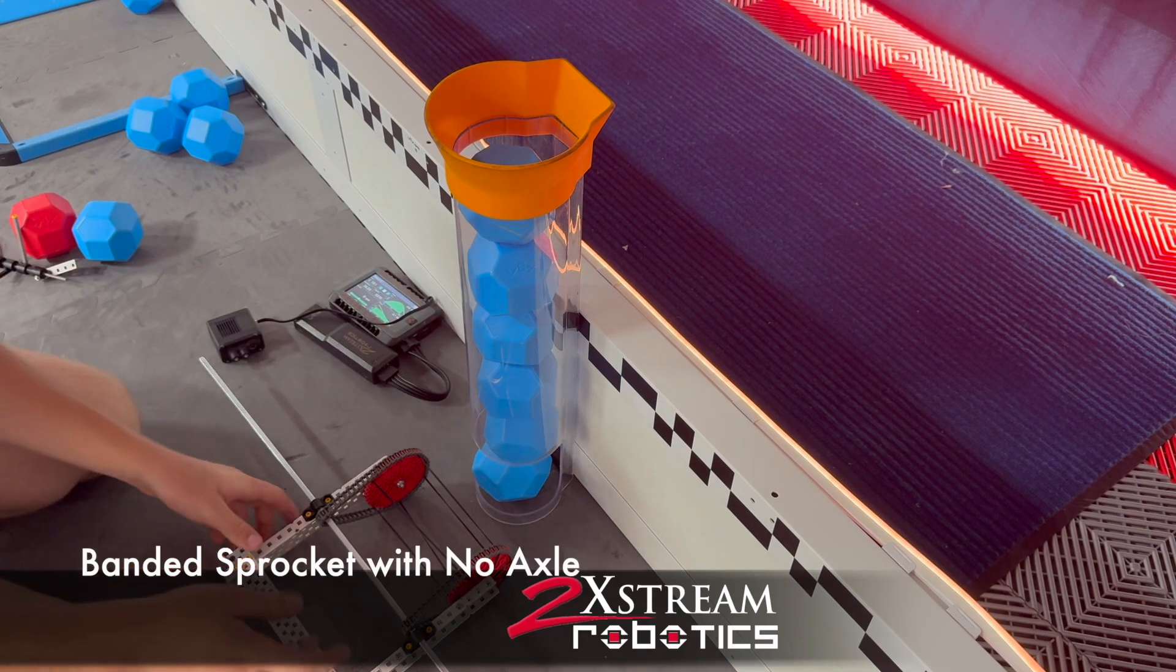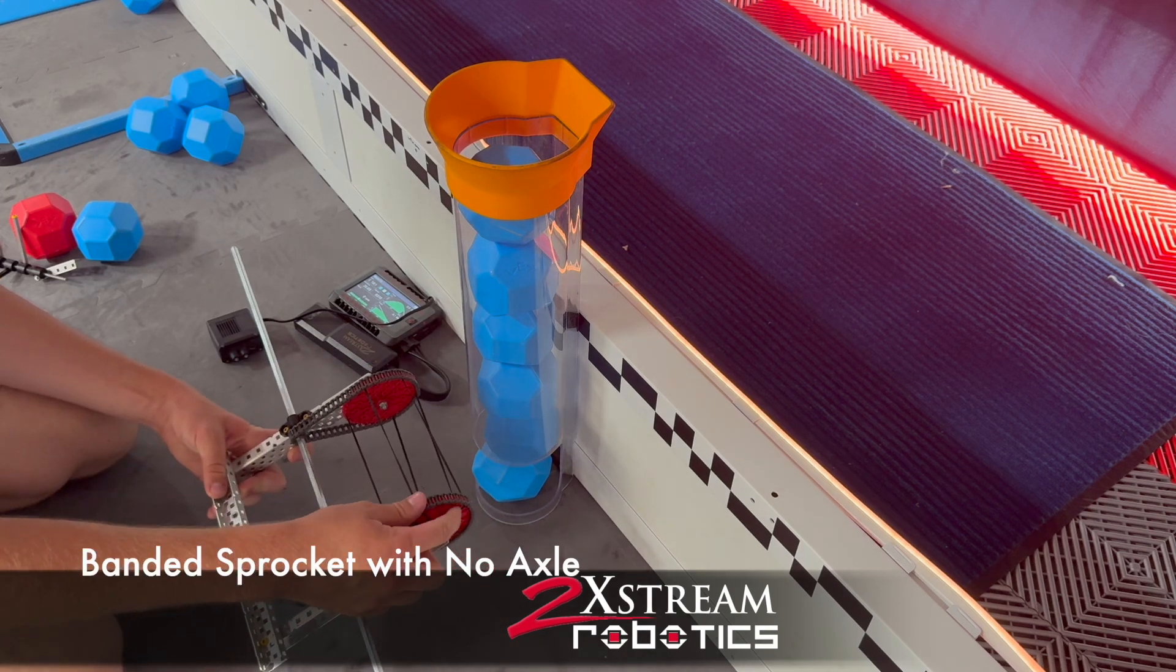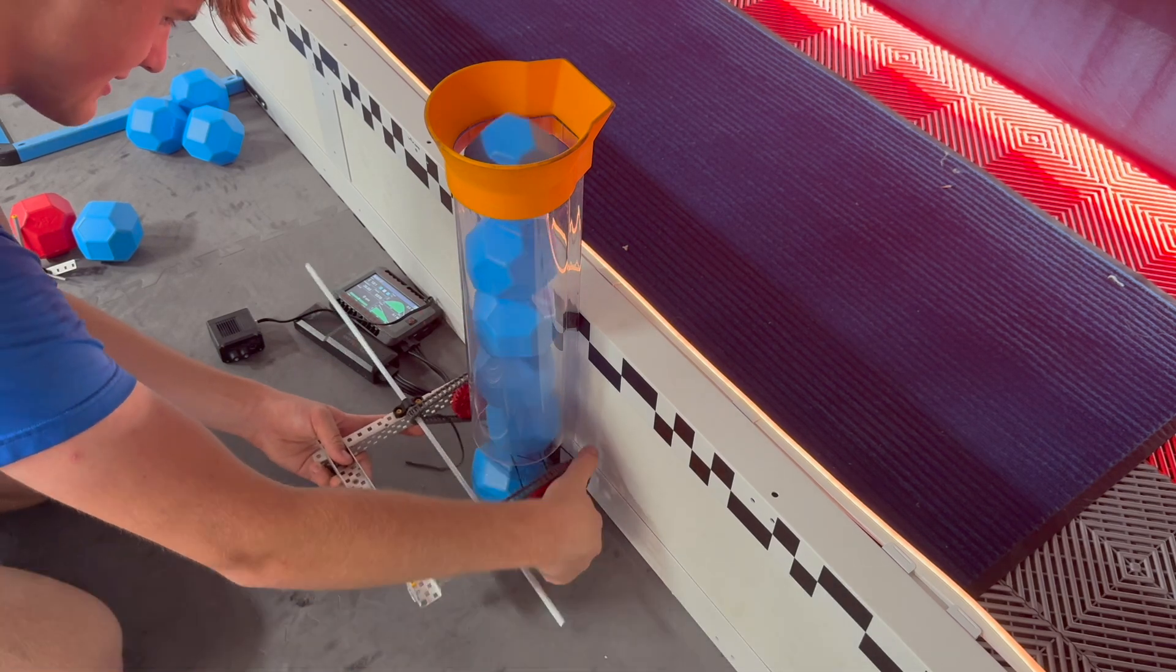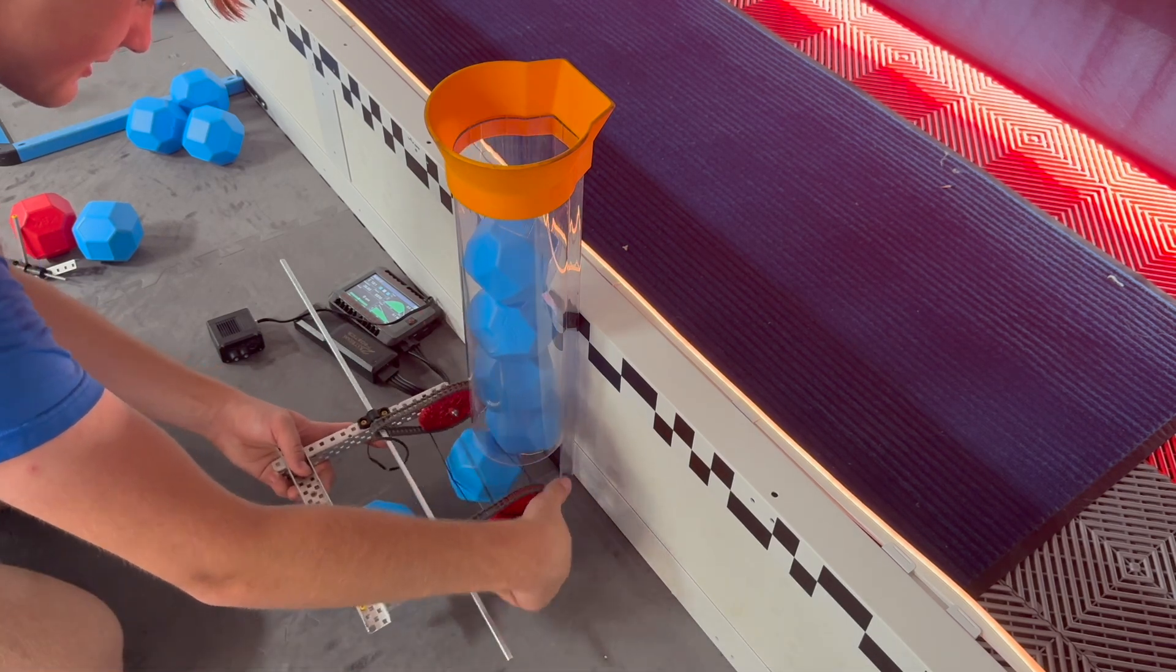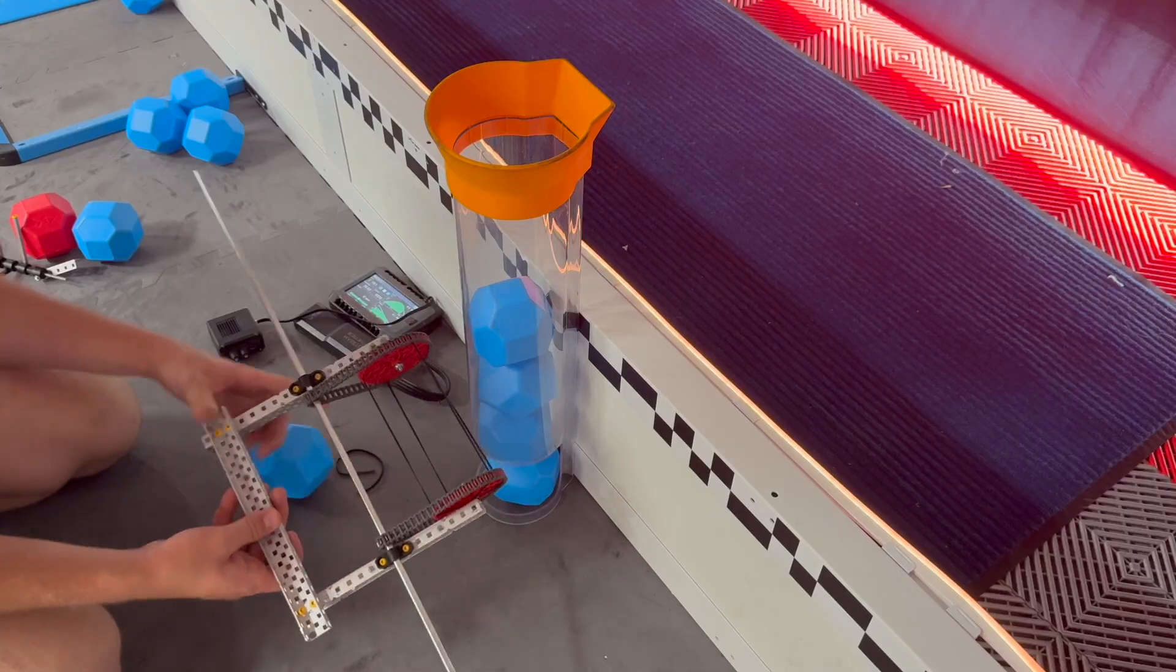The final mechanism I want to talk about is a sprocket with rubber bands through it, but it has no axle in between it, so it can go further up into your match load stations and bring the balls out. Now, this is just a rough model and I'd recommend using the thicker bands instead of the thin ones.